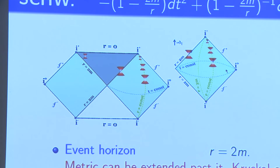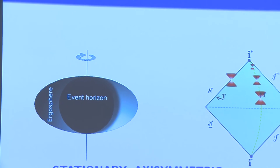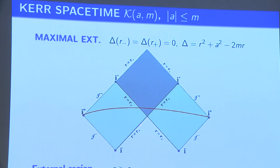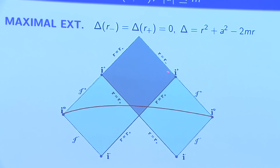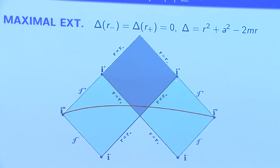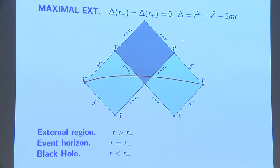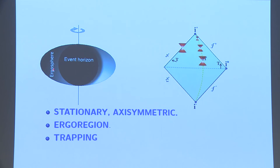The Kerr spacetime is very similar in the exterior region, except that the horizon is now at r equal to r-plus, which is the root of the polynomial delta. The black hole is slightly different in that you don't have that singularity at r equal to zero. There is a spacelike hypersurface on which I want to give initial data — perturbing the Kerr solution. There is the external region r larger than r-plus, the event horizon, and the black hole region r less than r-plus.